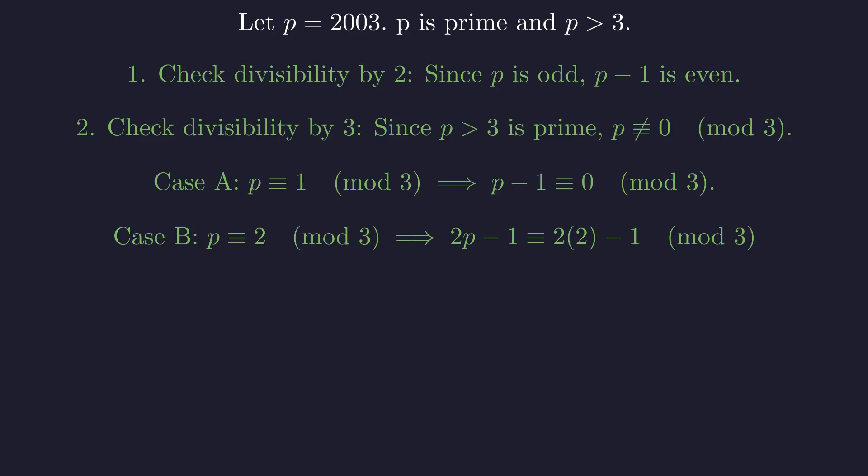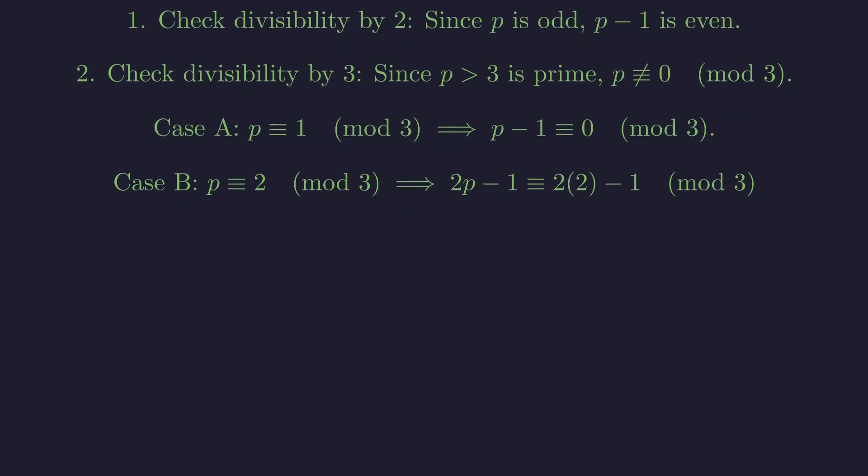In the second case, if p leaves remainder 2 when divided by 3, then we need to check 2p minus 1. Substituting p equals 2 in this expression, modulo 3, we get 4 minus 1, which equals 3, which is congruent to 0 modulo 3. So in this case, 2p minus 1 is divisible by 3.